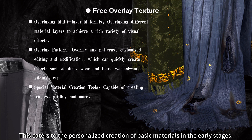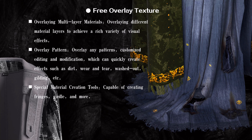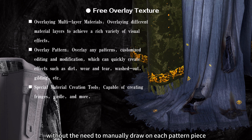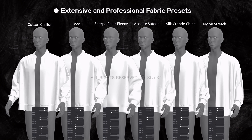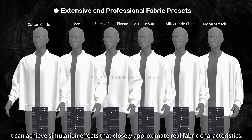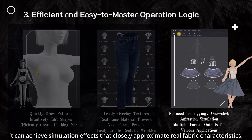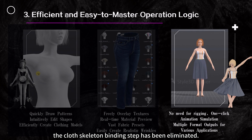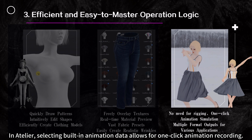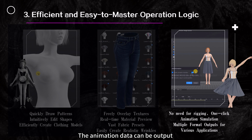This caters to personalized creation of basic materials. It also possesses special material creation tools — through customizing topstitch, it can rapidly produce edge fringes, girdle, etc., without manually drawing on each pattern piece. It has extensive and professional fabric presets, achieving simulation effects that closely approximate real fabric characteristics by measuring physical properties with professional equipment. The cloth skeleton binding step has been eliminated — selecting built-in animation data allows for one-click animation recording, with output in various formats for different scenarios.